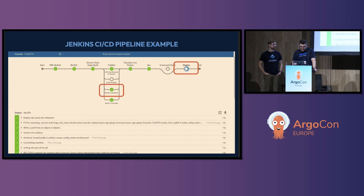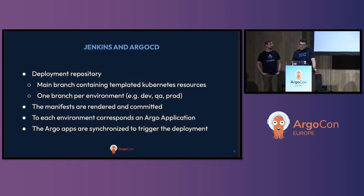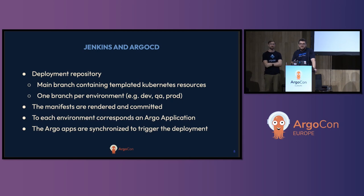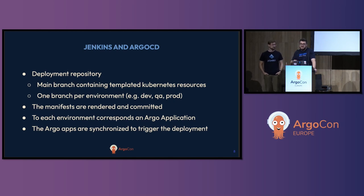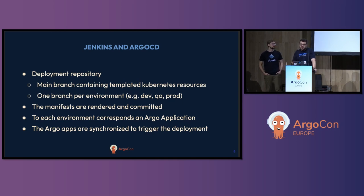At Intuit, for each code repository we have an associated deployment repository. The deployment repository is structured as follows: you have the main branch, which holds all the templated Kubernetes resources. We use Kustomize to customize those resources. Then for each environment — dev, QA, prod — we have a corresponding branch which holds the rendered manifests for that environment. When we render the manifests, we usually update the Kubernetes resources with a new image tag for that environment, and commit this to the target branch. This is where GitOps shines — we can track all changes and know exactly what and when a deployment has been triggered.